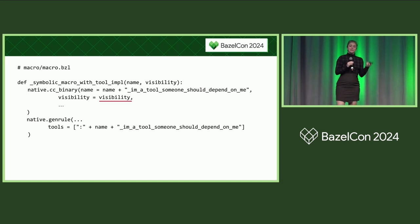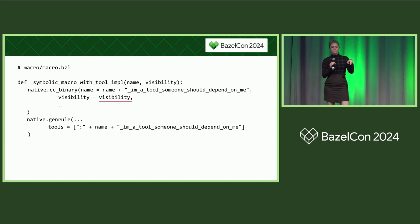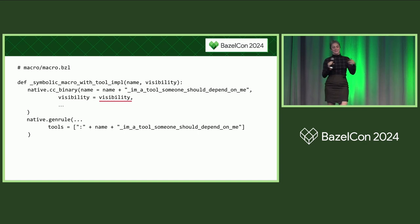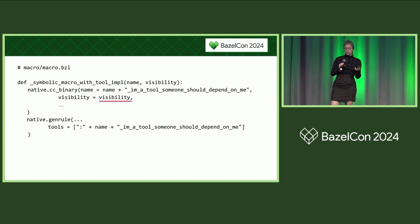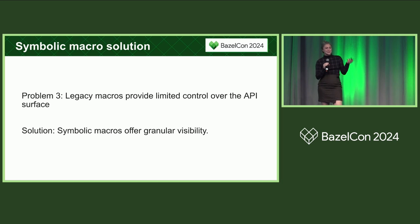If you did want to export a target for use outside the macro, you can thread through the visibility from the caller. Notably, this shouldn't be visibility equals public within the body of the macro, because that means the caller can't restrict the visibility as it would like. A target exported by threading through visibility will always be visible to the caller without having to specify it explicitly.